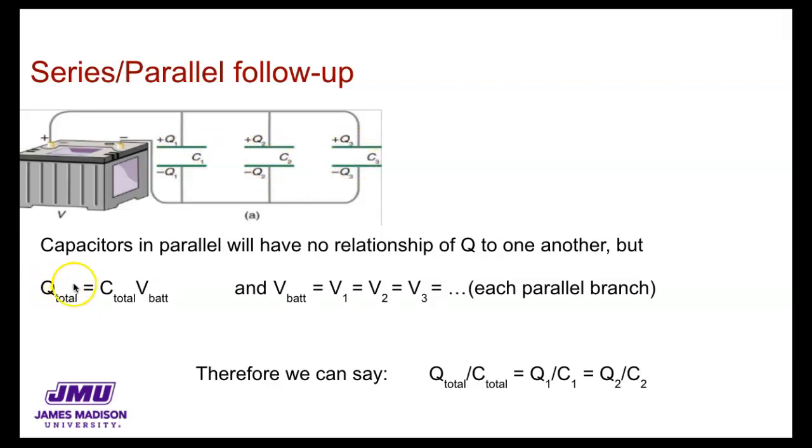It should also be clear that the total charge accumulated across these three capacitors will be the total charge of this one plus the total charge of this one plus the total charge of this one. They don't have equal amounts of charge unless they happen to be identical capacitors.